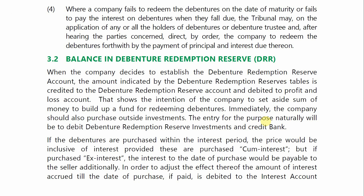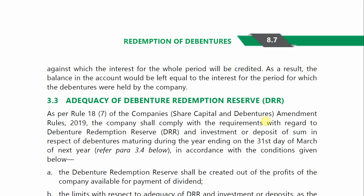If the debentures are purchased within the interest period, the price would be inclusive of interest provided these are purchased cum interest. But if purchased ex-interest, the interest to the date of purchase would be payable to the seller additionally. To adjust the effect thereof, the amount of interest accrued till the date of purchase, if paid, is debited to the interest account, against which the interest for the whole period will be credited, leaving the balance equal to the interest for the period the debentures were held by the company.